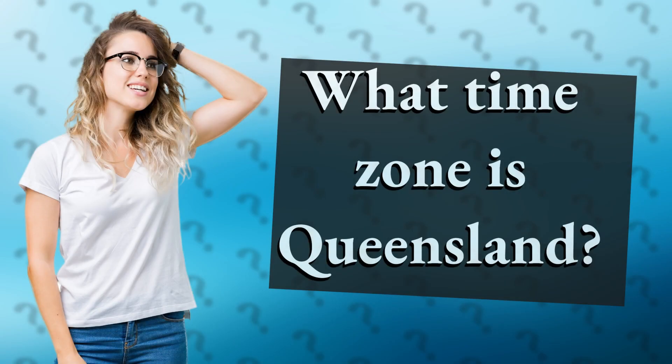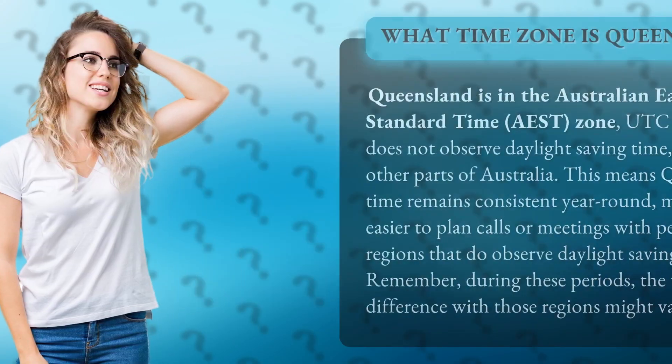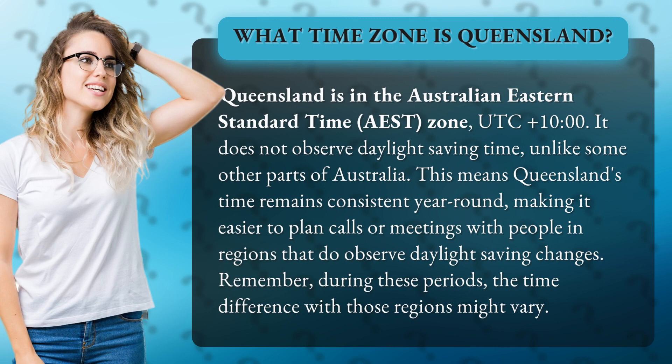What time zone is Queensland? Queensland is in the Australian Eastern Standard Time (AEST) zone, UTC plus 10. It does not observe daylight saving time.